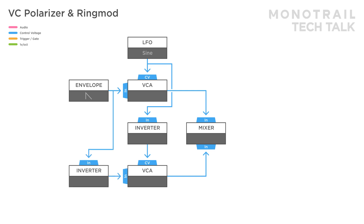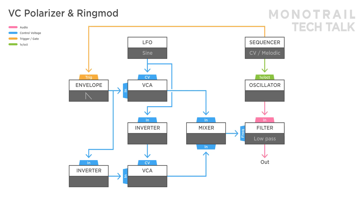In this setup, the envelope is used to modulate the filter in a simple sequenced voice. The LFO is effectively crossfading between the two inputs — the regular positive envelope and the inverted negative envelope. Or, in other words, it's polarising the envelope.